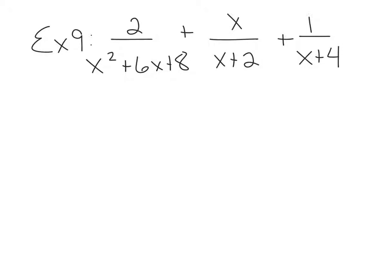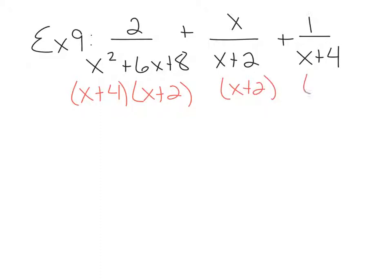Example 9 on page 153: 2 over x squared plus 6x plus 8, plus x over x plus 2, plus 1 over x plus 4. I'll list the factors underneath the denominators. x squared plus 6x plus 8 is a standard trinomial that factors to x plus 4 times x plus 2. The other denominators are prime, so they don't factor. Using parentheses to remind me they're binomials and I can't use terms separately. The common denominator must have the whole first list: x plus 4, x plus 2. Both remaining denominators are already covered, so the common denominator is x plus 4, x plus 2.